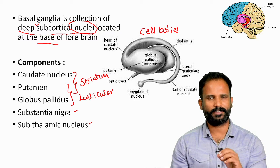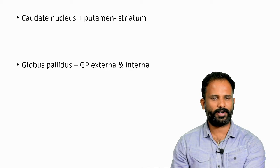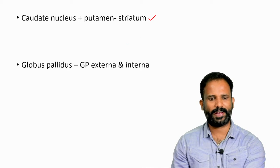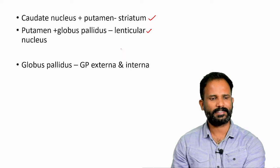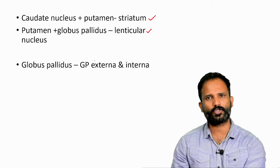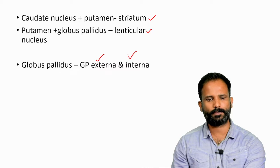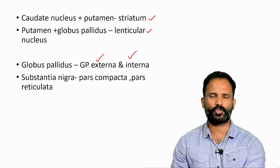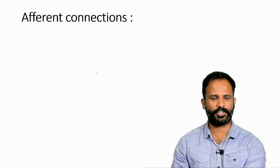To summarize: caudate nucleus plus putamen is called the striatum, and putamen and globus pallidus is called the lenticular nucleus. Globus pallidus has two components: globus pallidus externa and globus pallidus interna. Substantia nigra has two parts: pars compacta and pars reticulata.